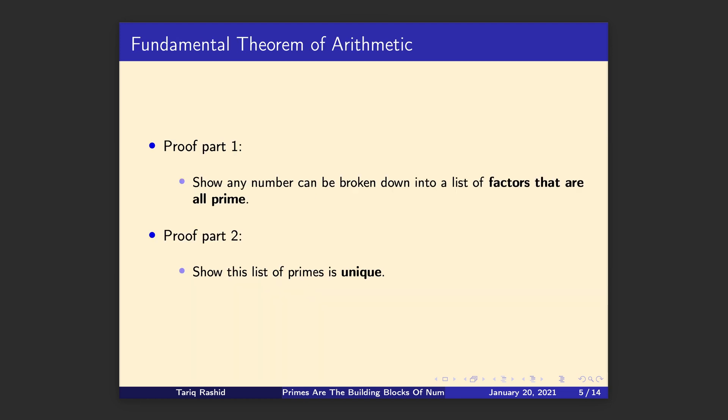Right. So what we're going to do is break this proof down into two parts. The first part is to say, we want to show that any number can be broken down into a list of factors that are prime, that are all prime. We do that by example, but as we said previously, examples, even lots of them, aren't proof. We need a more rigorous logic that we can't argue with. And the second thing we're going to do is to show that that list of primes is unique to that number. So we're going to make our job easier by breaking our proof down into two bits.